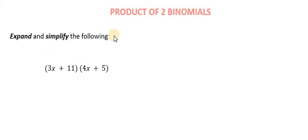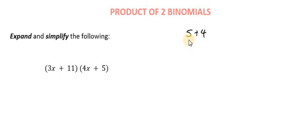We're looking at the product of two binomials. What happens when we multiply two binomials? A binomial is basically two terms — a two-term expression. So let's say we have 5 plus 4. That's a binomial. We have two terms. And so what happens when we multiply one binomial by another binomial?